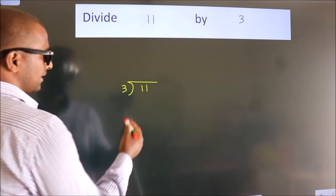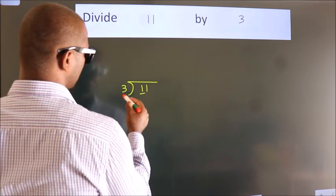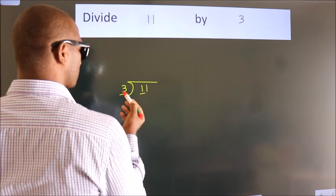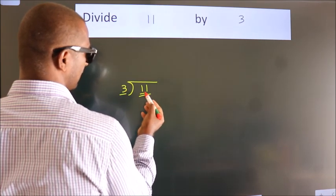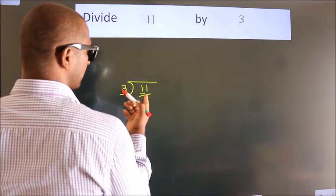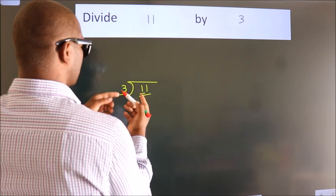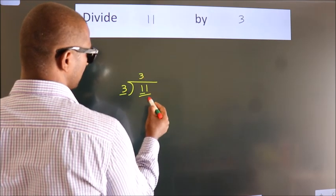Next, here we have 1, here 3. 1 is smaller than 3, so we should take 2 numbers: 11. A number close to 11 in the 3 table is 3 times 3 equals 9.